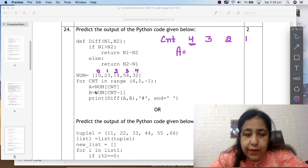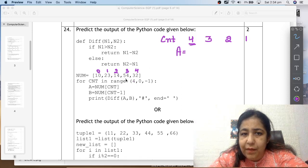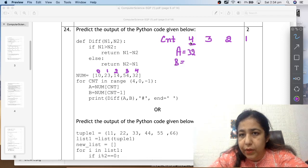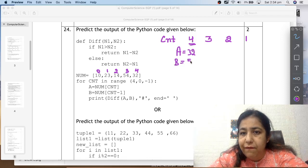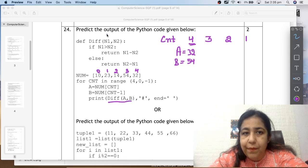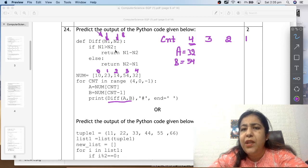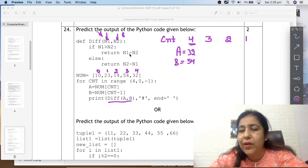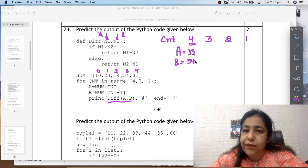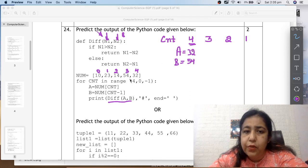When your cnt is four, what will come in a? Num cnt. Whenever a list is given, write its positions first. So we wrote positions: zero, one, two, three, four. A is equal to num cnt. cnt is four for me. So 32 is here. What will come in b? cnt minus one. cnt is four, four minus one is three. Num three is 54. So here will come 54. Now we call the function, print div a comma b. So a will go in your n1, b will go in your n2. And after that we have to print hash and whatever is returning. Now see what the function is doing. It is checking if n1 is greater than n2, then return n1 minus n2. Otherwise n2 minus n1. So 32 is not greater than 54. So 54 minus 32 will be done, which will be 22.